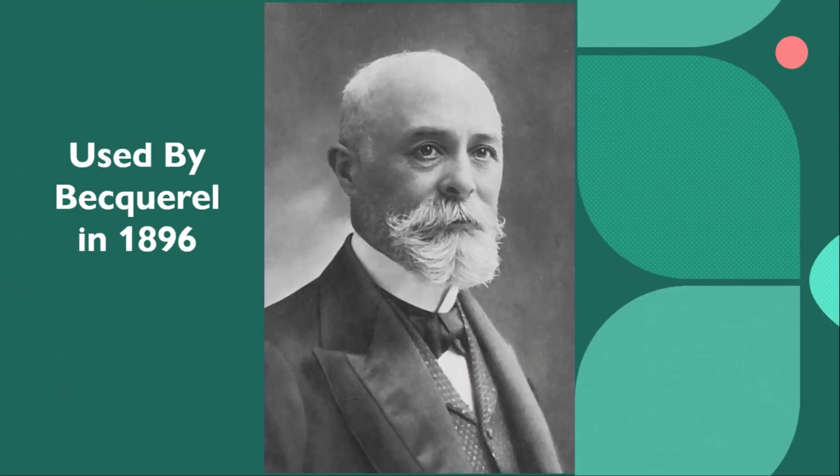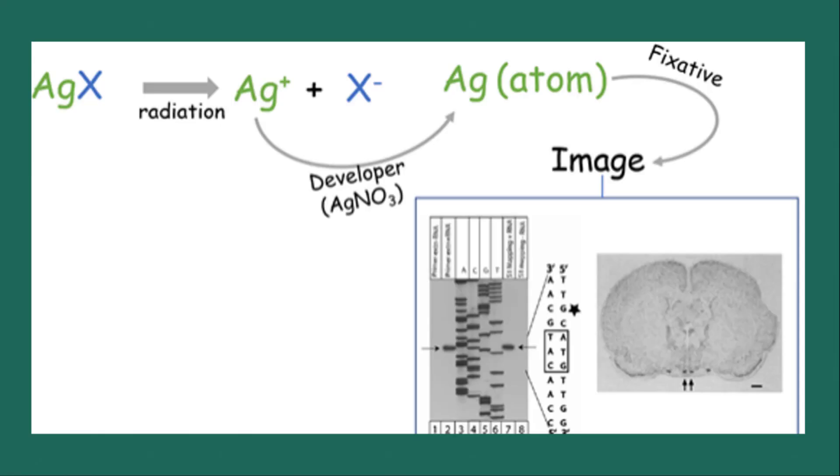In this method, ionizing radiations interact with the AgX, which is silver halide, in photographic emulsion. When radioactive material is placed near a photographic film or plate, a blackening will be produced on development of the emulsion.